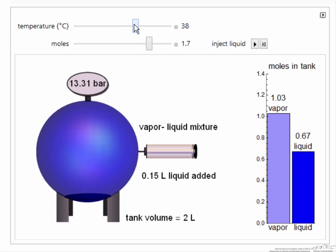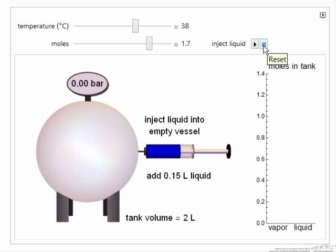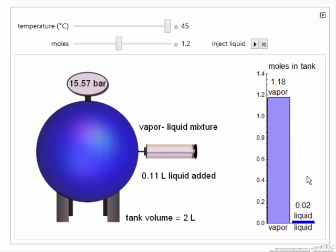I can change the temperature in the tank, so I can reset, and I could do this at a much higher temperature. Let's say we do it with a smaller number of moles, and now when I select inject, notice we have almost no liquid.